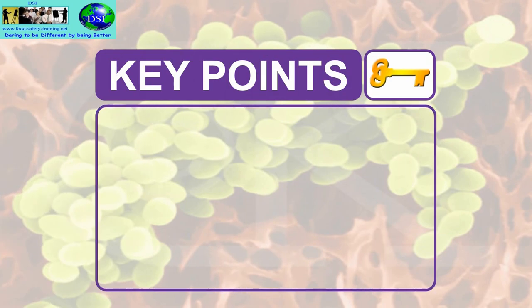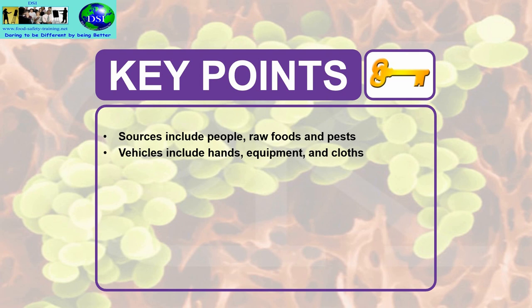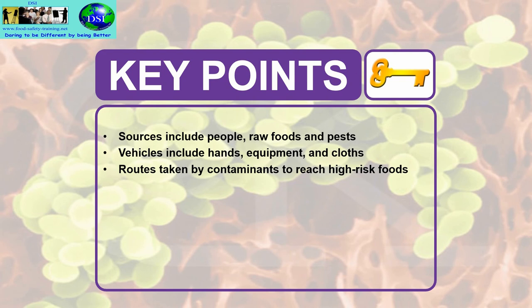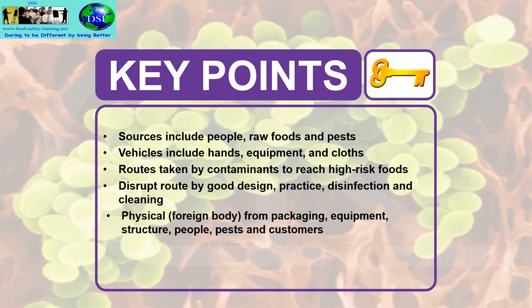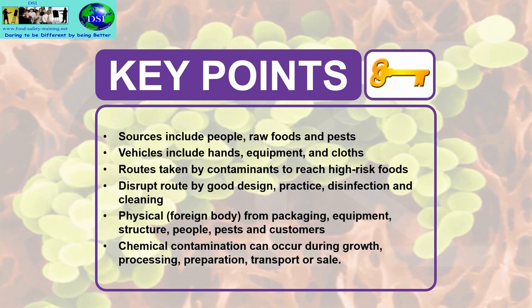The key points of this lecture: Sources of contamination include people, raw foods and pests. Vehicles include hands, equipment and cloths. Routes taken by contaminants to reach high-risk foods were covered, and we can disrupt the route by good design, practice, disinfection and cleaning. Physical foreign bodies can come from packaging, equipment, structure, people, pests and customers. Chemical contamination can occur during growth, processing, preparation, transport or sale.